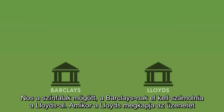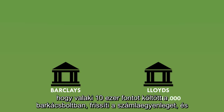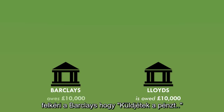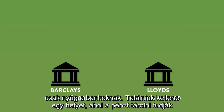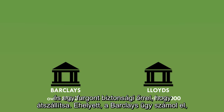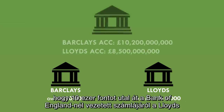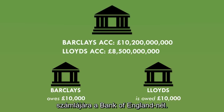Why? Because behind the scenes, Barclays needs to settle with Lloyd's. When Lloyd's gets the message that someone has spent £10,000 in the DIY store, it updates their account balance and then calls Barclays to say, send me the money. Barclays could settle with Lloyd's by delivering £10,000 in cash, but in reality that's just a hassle for both banks — they'd have to find somewhere to store all the cash and a van with security to transport it. So instead, Barclays settles by making a £10,000 transfer from its reserve account at the Bank of England to Lloyd's reserve account at the Bank of England.